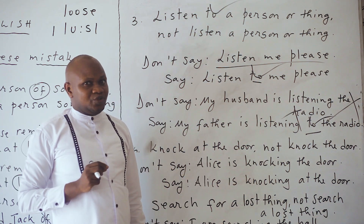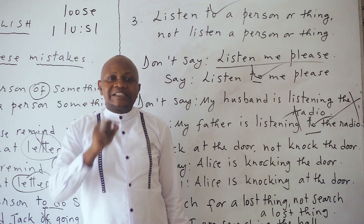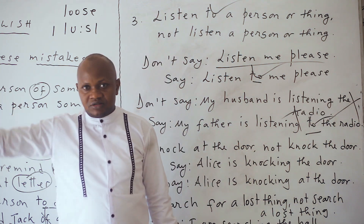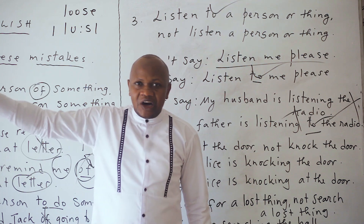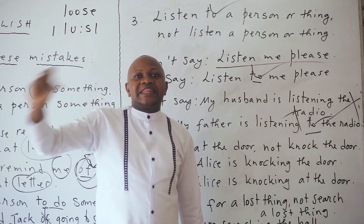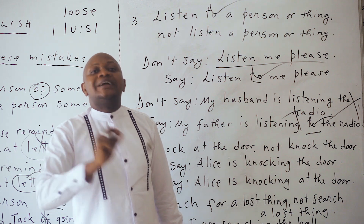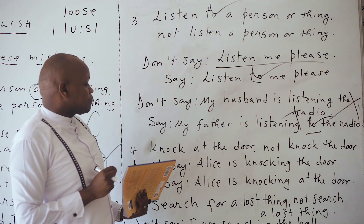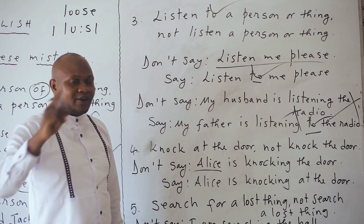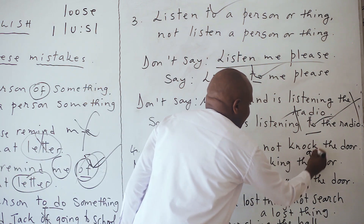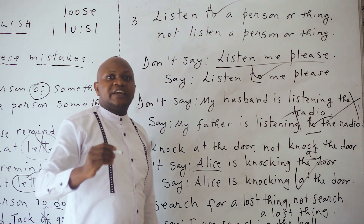Knock at the door. We don't say 'knock the door.' She was knocking at the door. Someone is knocking at the door — hurry, open for them. Don't say 'someone are knocking the door' or 'I was knocking your door yesterday.' You say 'I was knocking at your door yesterday.' Alice is knocking at the door.